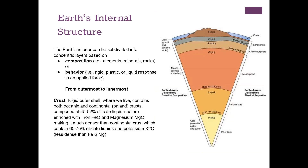First we have the crust — it's where we live, where the biosphere is, really the best layer of the Earth. The crust is the rigid outer shell containing both oceanic and continental crust. Oceanic crust is composed of 45 to 52 percent silicate minerals and is enriched with iron and magnesium, making it much denser than continental crust, which contains 65 to 75 percent silicate minerals. So oceanic crust is much heavier than continental crust.